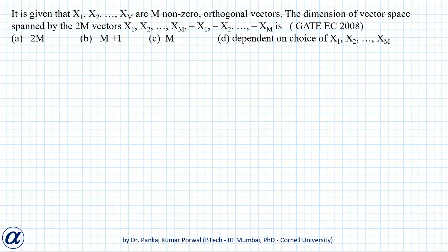In this question we are given that x1, x2, ..., xm are m non-zero orthogonal vectors, and we want to find the dimension of vector space spanned by 2m vectors: x1, x2, ..., xm and -x1, -x2, ..., -xm.